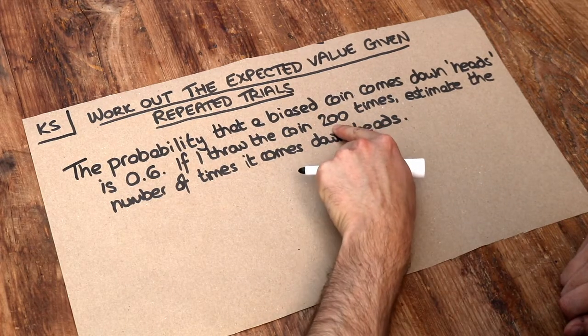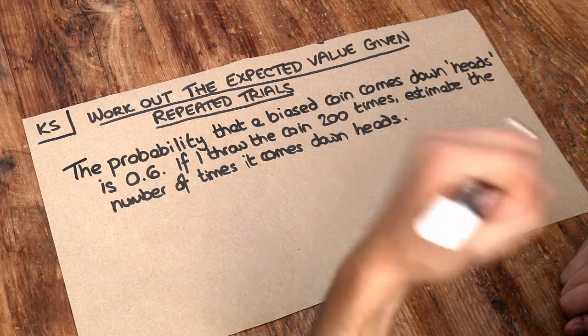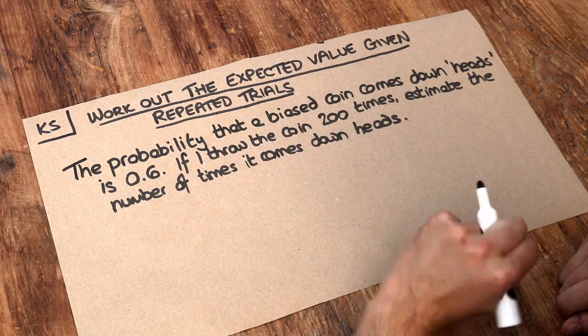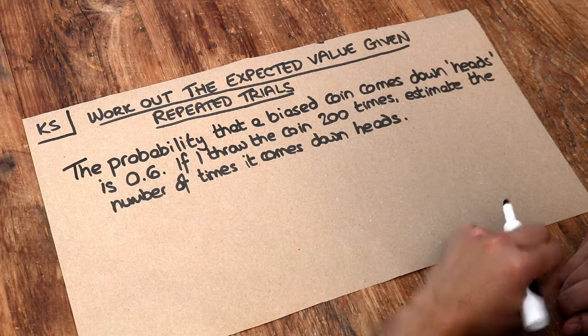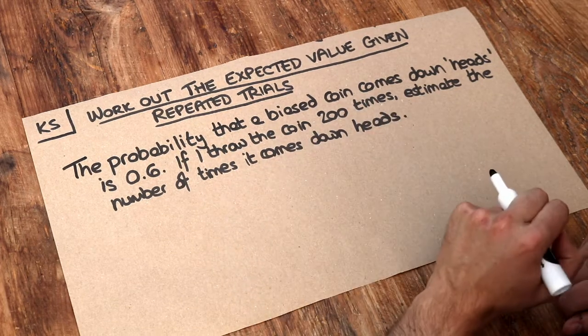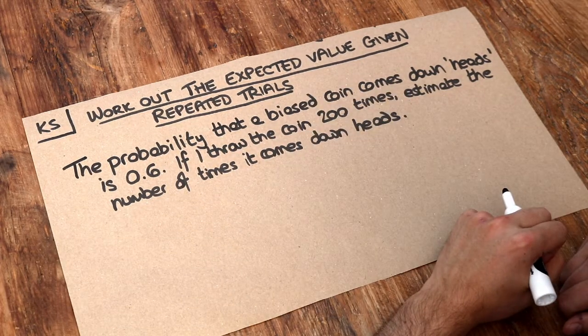Now if we throw the coin 200 times we expect it to come down heads 60% of the time, and therefore we can just find 60% of 200 to get an estimate of how many heads we'll see.